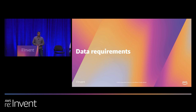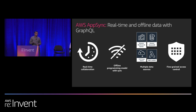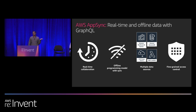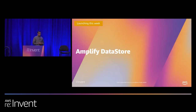Now we'll cover the bulk of our talk: data requirements. A year and a half ago we launched the general availability of AppSync to meet the data requirements of mobile and web apps. It's a managed GraphQL service, addressing real-time collaboration, offline programming models, the ability to front multiple data sources with a single GraphQL API, and leveraging GraphQL's strong type system to enable fine-grained access control. With that, I'd like to introduce my colleague Richard Threckel, a senior engineer working on Amplify and AppSync, to go into much more detail on Amplify Datastore.